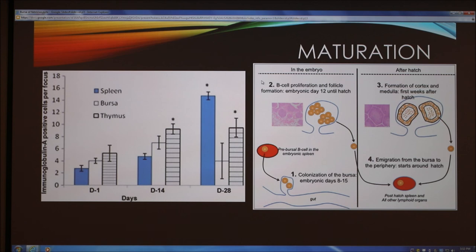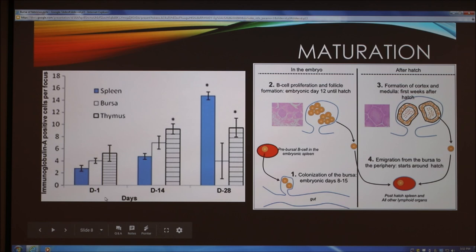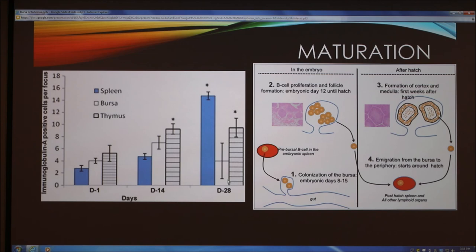By two weeks, the bursa of Fabricius has reached its full size and begins to shrink as the bird ages, as shown in the chart. The white bar represents B-cells in the bursa and the blue bar represents B-cells in the spleen. Between day 1 and day 14, the white bar increases, meaning more B-cells are present at day 14 than at day 1, and the spleen cells increase similarly. However, by day 28, when the bursa has peaked and begins to deteriorate, B-cells decrease dramatically in the bursa, whereas spleen B-cells have increased dramatically — because the bursa's function has peaked and the spleen has received a great deal of differentiated B-cells from the bursa.